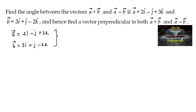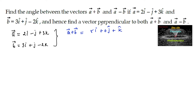The sum of the vectors, a plus b, is equal to 2 plus 3, that is 5i, and minus 1 plus 1, that is 0j, and 3 minus 2, that is 1k. The difference vector a minus b is equal to 2 minus 3, that is minus 1i.